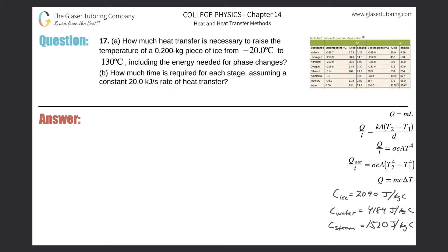Number 17, letter A: how much heat transfer is necessary to raise the temperature of a 0.2 kilogram piece of ice from negative 20 degrees Celsius to 130 degrees Celsius, including the energy needed for phase changes?